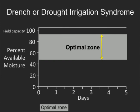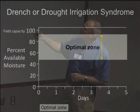This is where we want to keep our moisture reading from when we plant through harvest. That's the optimal zone.